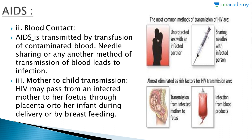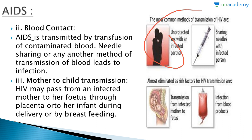Secondly, blood contact: AIDS is transmitted by transfusion of contaminated blood, and needle sharing or any other method of blood transmission leads to infection. Thirdly, mother-to-child transmission: HIV may pass from an infected mother to her fetus through the placenta, or to her infant during delivery or through breastfeeding. These are the diagrams showing the most common methods of HIV transmission — having unprotected sex with an infected partner, or sharing needles with an infected person.